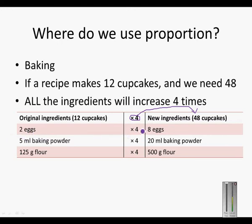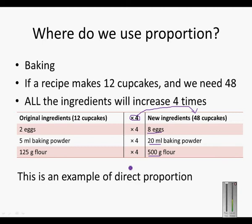2 eggs times 4 gives us 8 eggs. 5 milliliters of baking powder times 4 gives us 20 milliliters of baking powder. 125 grams of flour times 4 gives us 500 grams of flour. This is an example of direct proportion: as the number of cupcakes we needed increased, all the ingredients also increased.